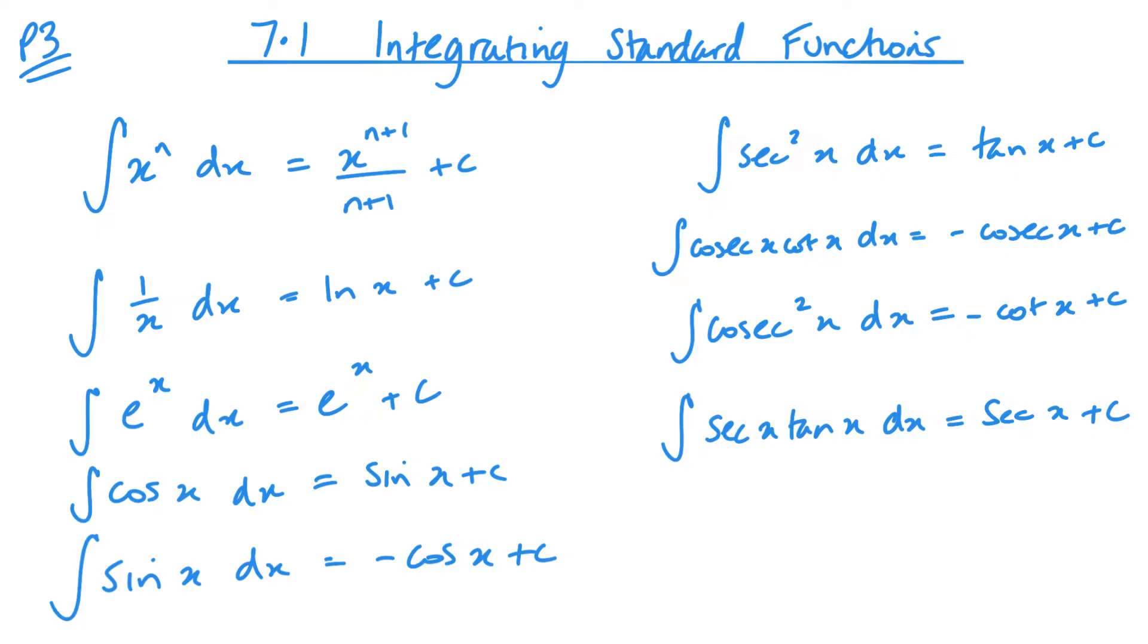Now the first one works for all values of n except for when n equals negative 1, and when it does equal negative 1, that's when we are looking at this second one. 1 over x is when x is to the power negative 1. So just a reminder there.